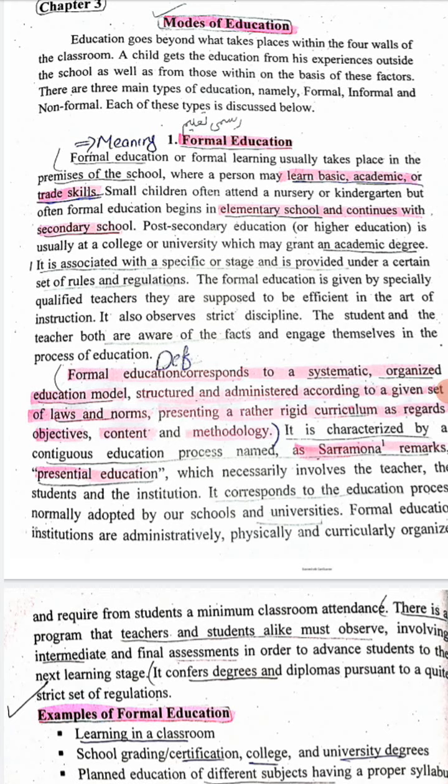Post-secondary education is usually associated with college and university, with a granted academic degree. It is associated with a specific stage and is provided under a certain set of rules and regulations, which we follow to continue our education.